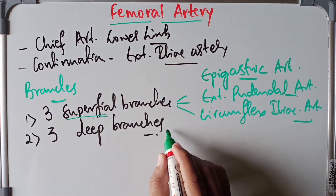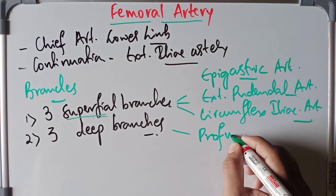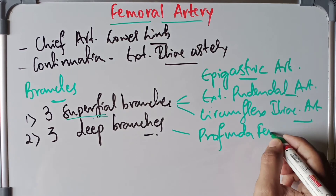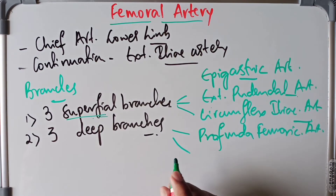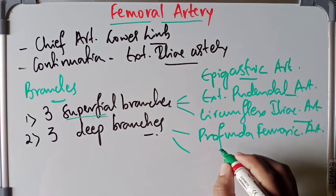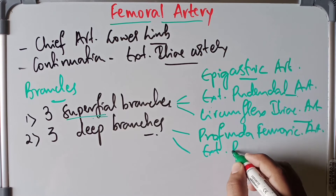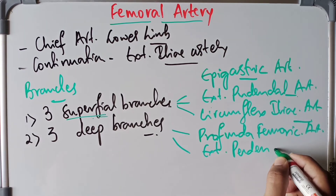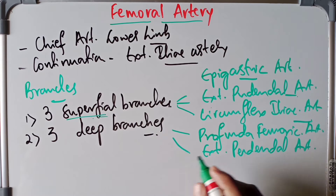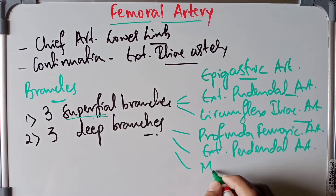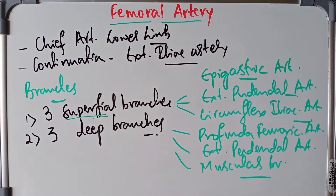The three deep branches of the femoral artery are: first, the profunda femoris artery, which is the largest branch of the femoral artery; second, the deep external pudendal artery — note there is both a superficial and a deep external pudendal artery; and third, the muscular branches, which are given off in the adductor canal.